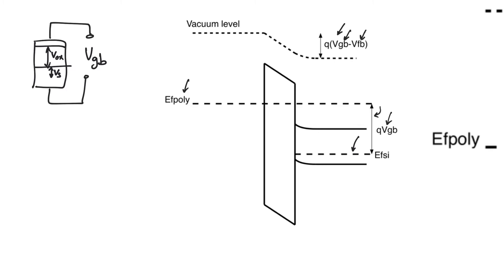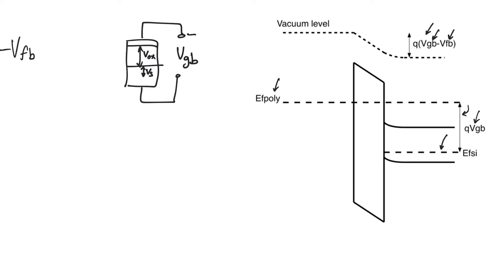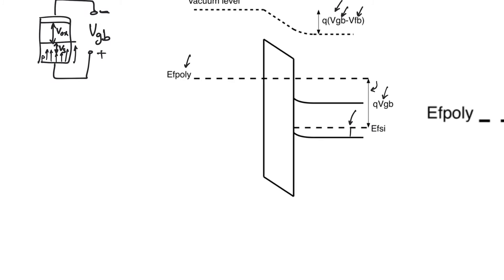When we apply a positive potential to the body, we are applying a negative potential to the gate. This negative potential to the gate is going to cause an attractive force on positive charge carriers in the substrate, attracting holes towards the interface of the substrate and the oxide. The substrate is P-type to begin with — we can see this due to the closeness of the Fermi level to the valence band edge. When we apply the positive potential to the body, we are attracting more holes towards the interface, increasing their density near the interface relative to the deep bulk concentration of holes.